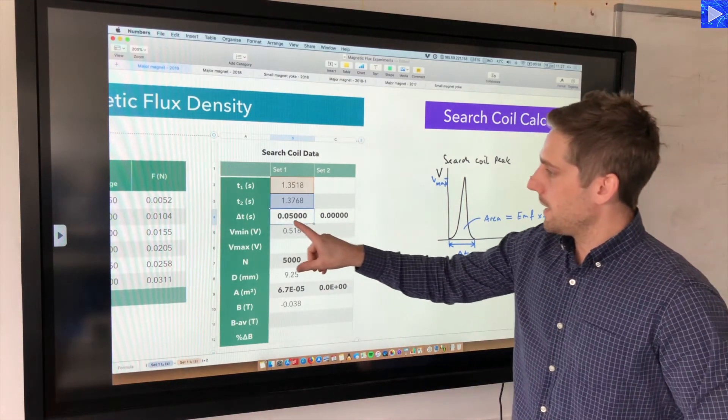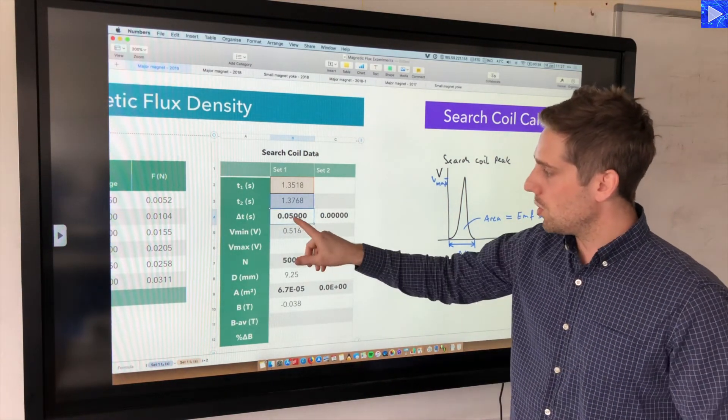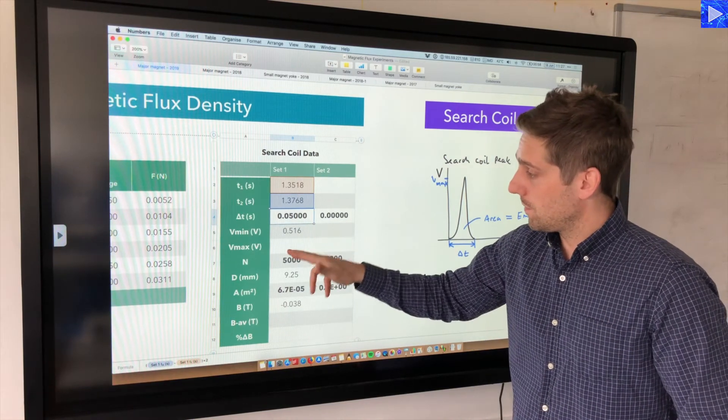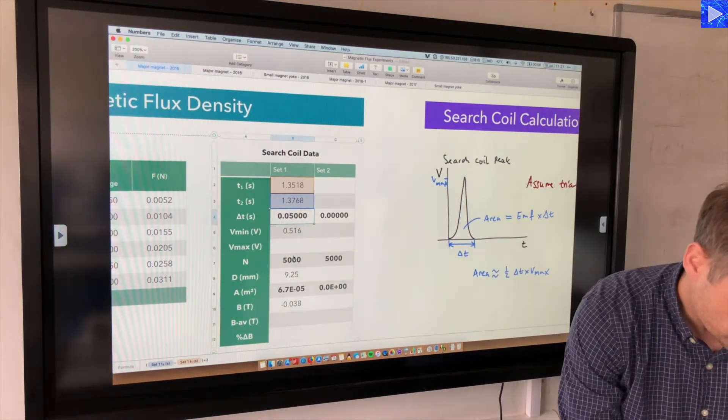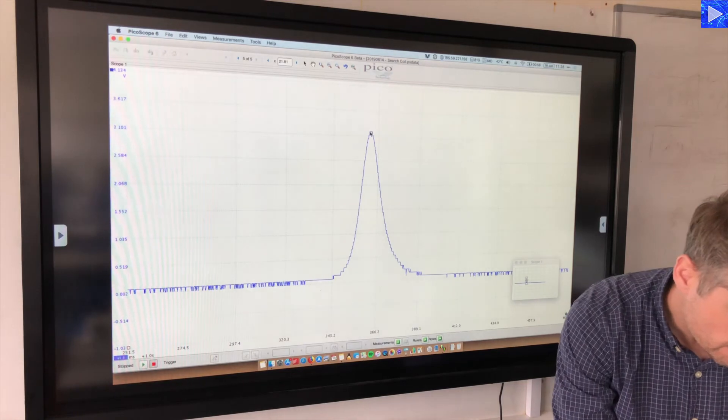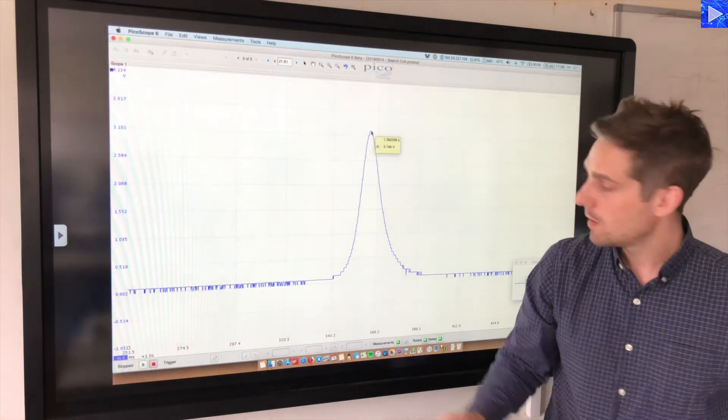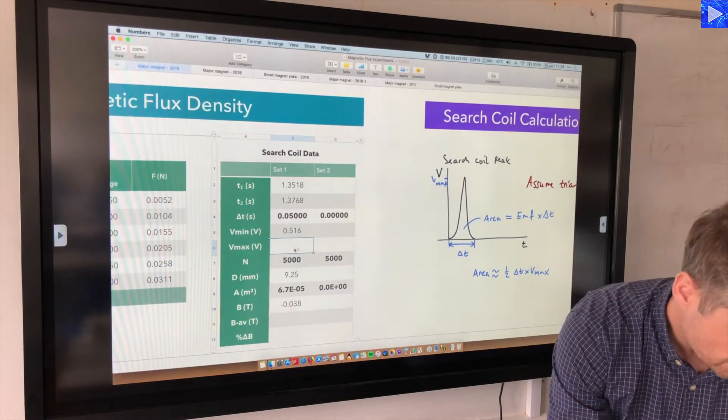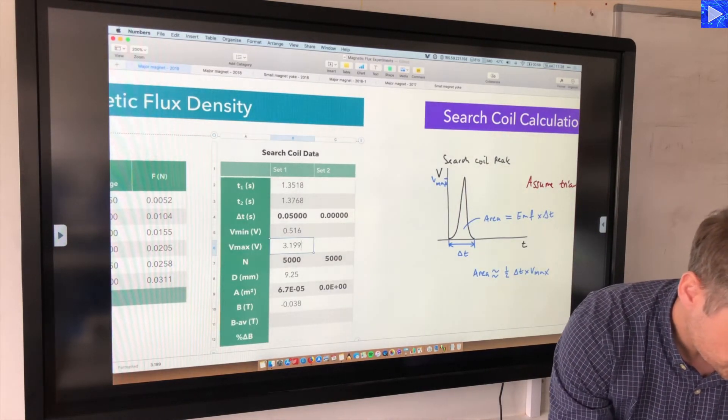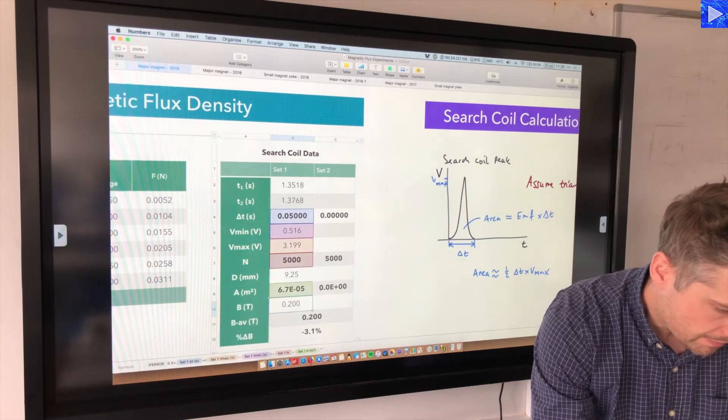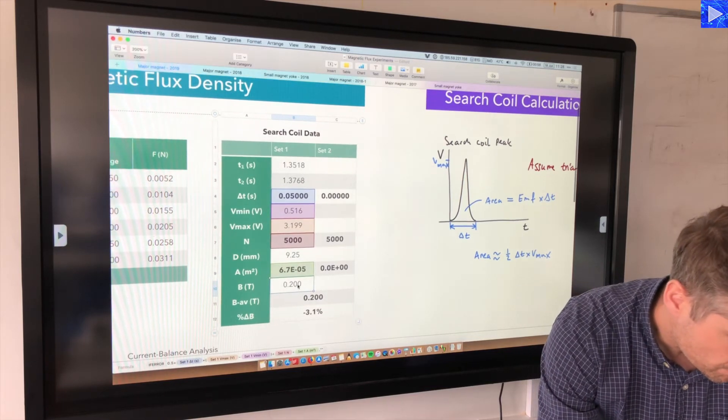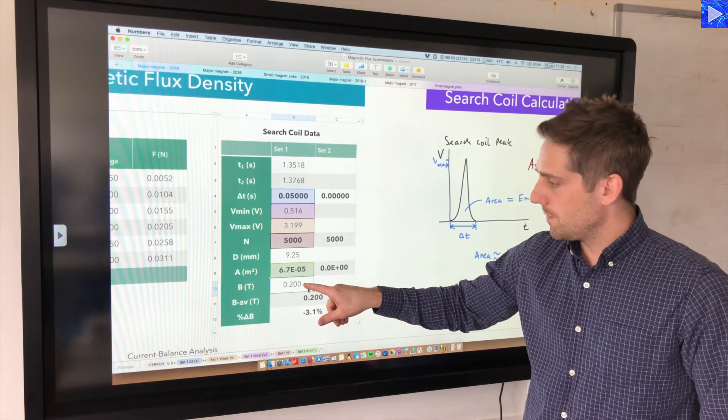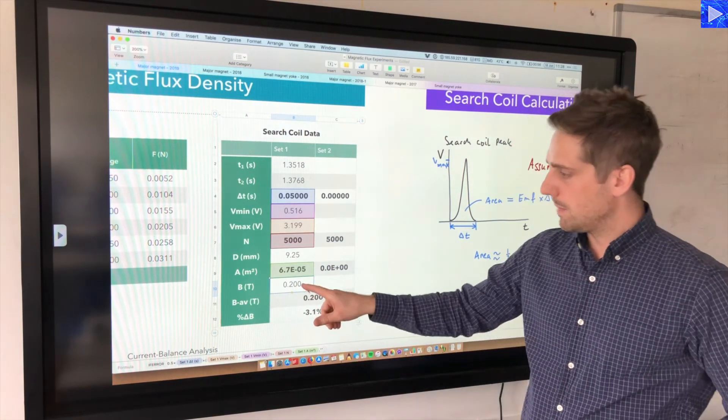Okay, so I'm getting a change in time of 0.05 seconds there. Now we just need to take the maximum voltage reading. Go over here and click on the peak. That's 3.199 volts. So I put this in here, 3.199.